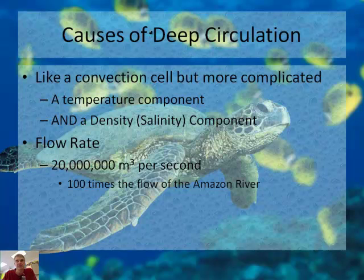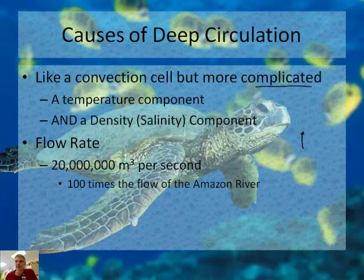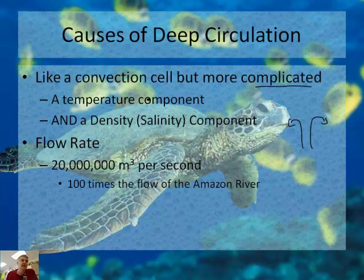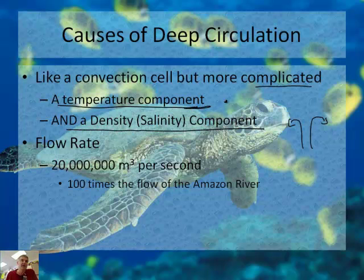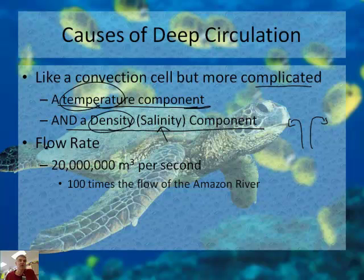Scientists are debating what causes the deep circulation. It's like a convection cell, but more complicated, because in a convection cell something is heated and creates that circulation — a huge transport system for energy. But the problem is it's not just a temperature thing. It has a temperature component and a salinity, or density, component. So when talking about this circulation, we have two factors — not just temperature but also density, which is related to how salty the water is.